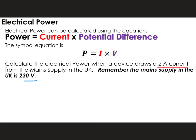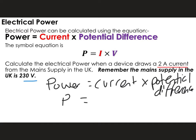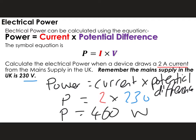So I'm going to write out my equation in full: power is equal to current times potential difference. I'm going to put my numbers in: P is equal to 2 multiplied by 230. Putting that into my calculator, 2 times 230 gives me an answer of 460 watts. In terms of marking points, I get a mark for correctly substituting into the equation, a mark for the correct answer, and a mark for the unit.